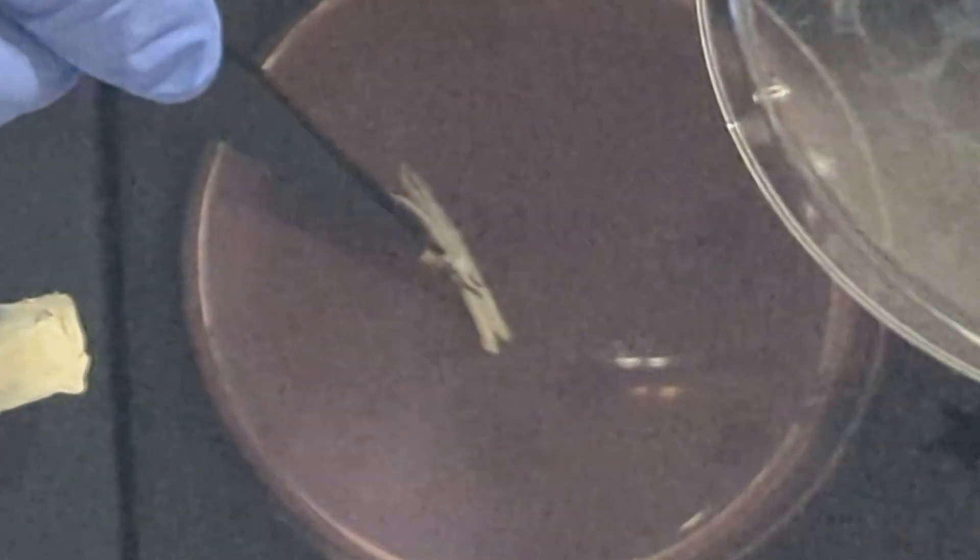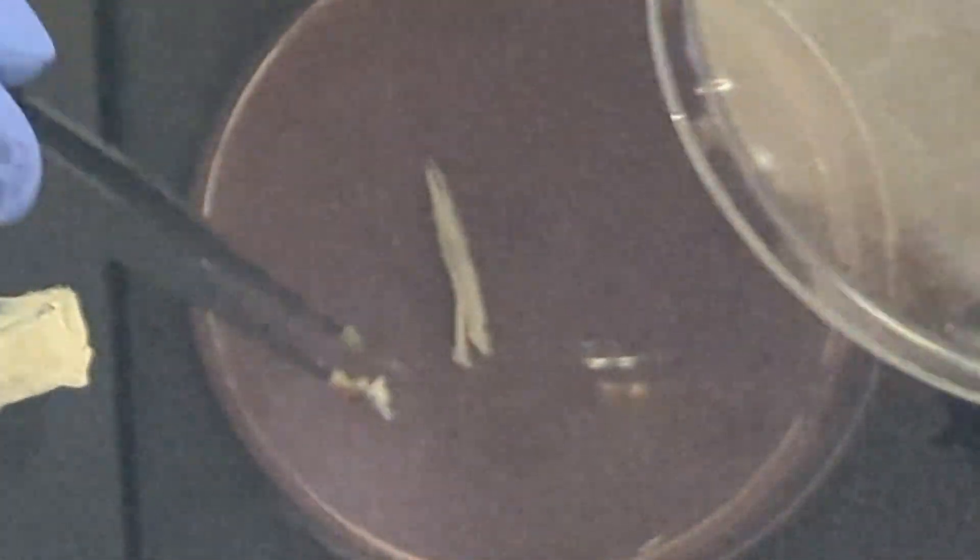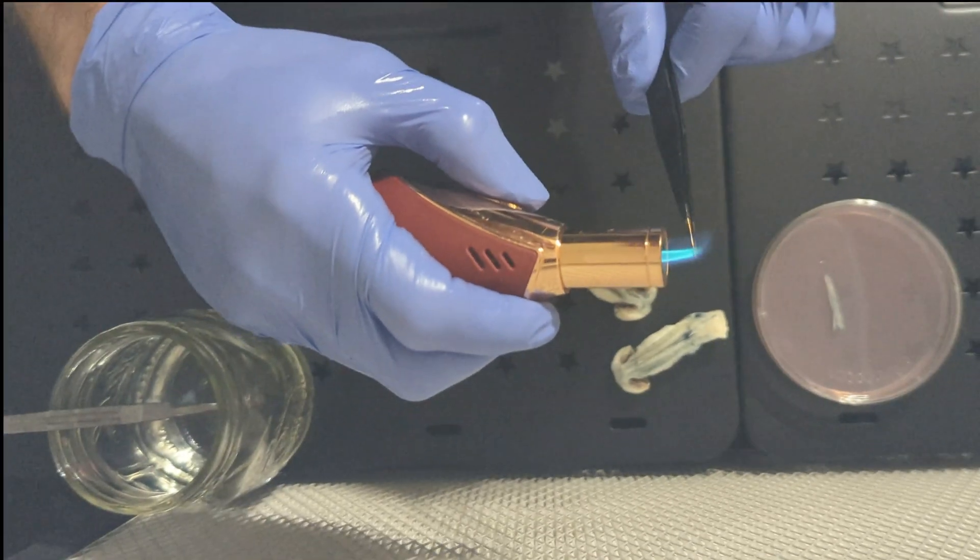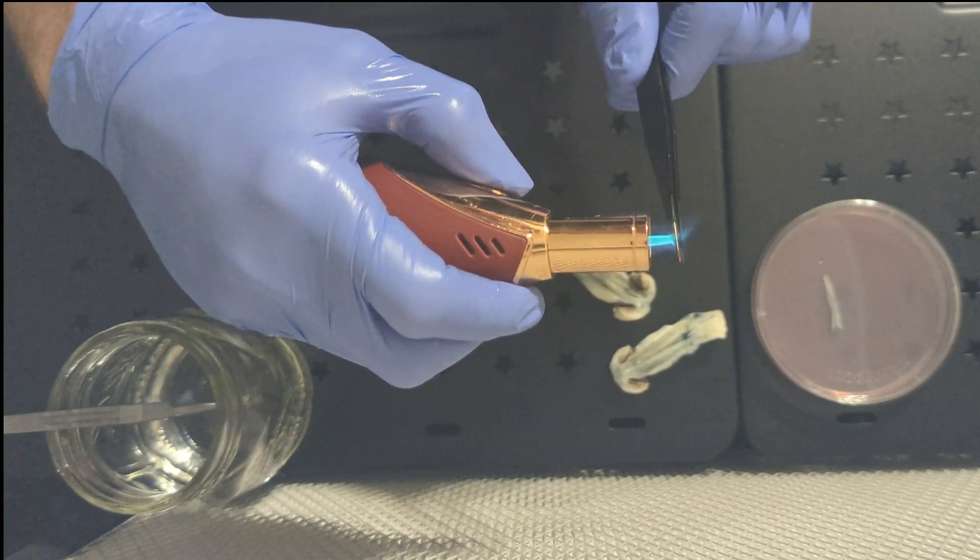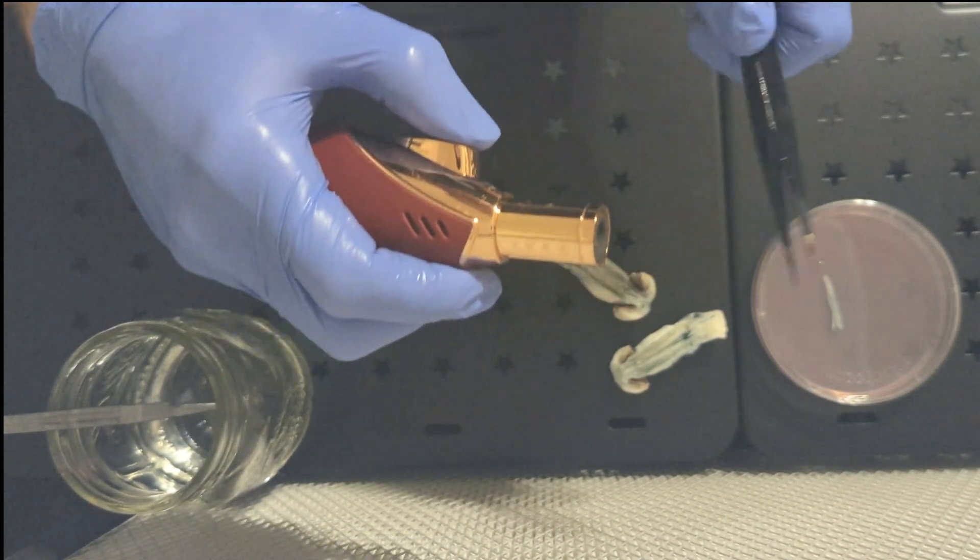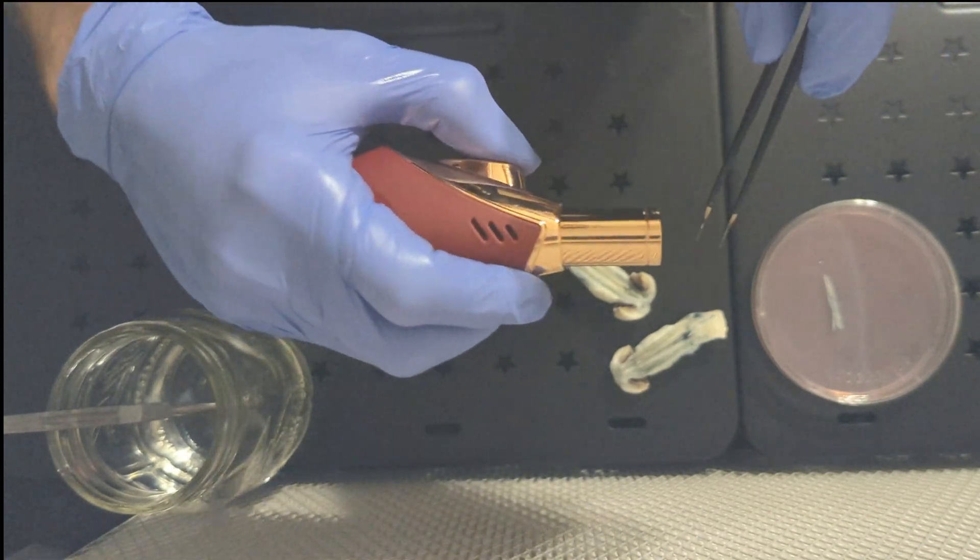Once you have the sample in the tweezers, you want to put it on the agar plate. You want to try and jam it into the agar or at least stick it to the agar so that it doesn't dry out. You're not necessarily trying to jam it underneath the agar, you're just trying to make sure that it's all in contact with the agar.